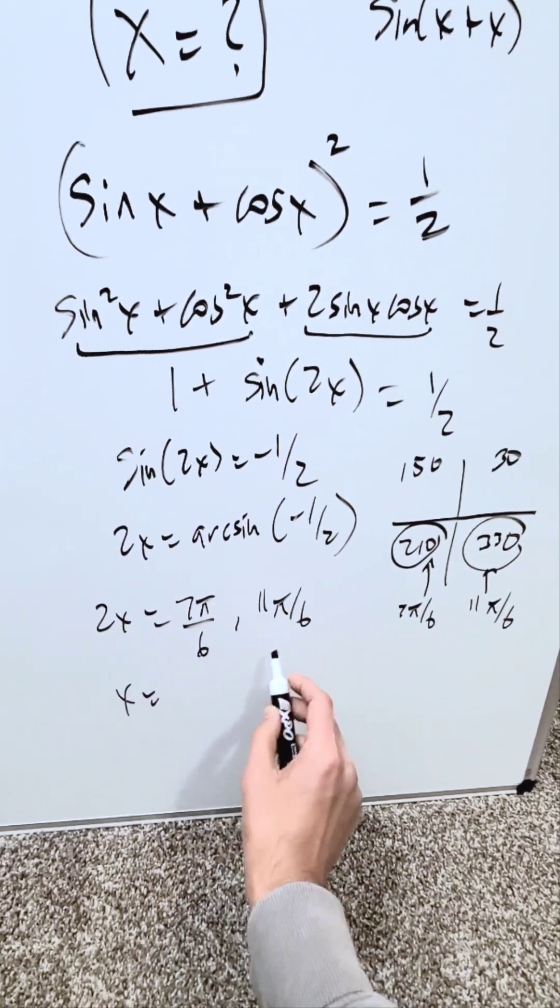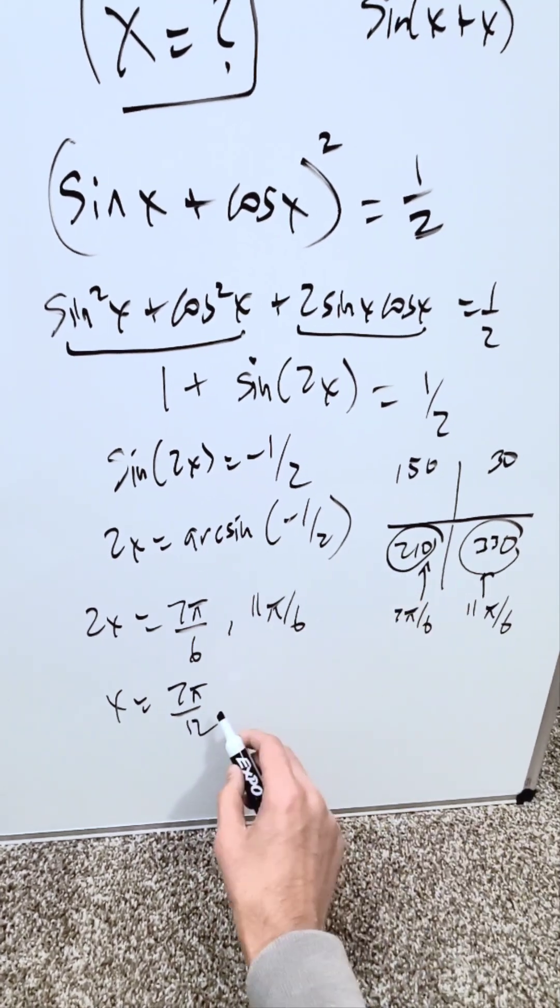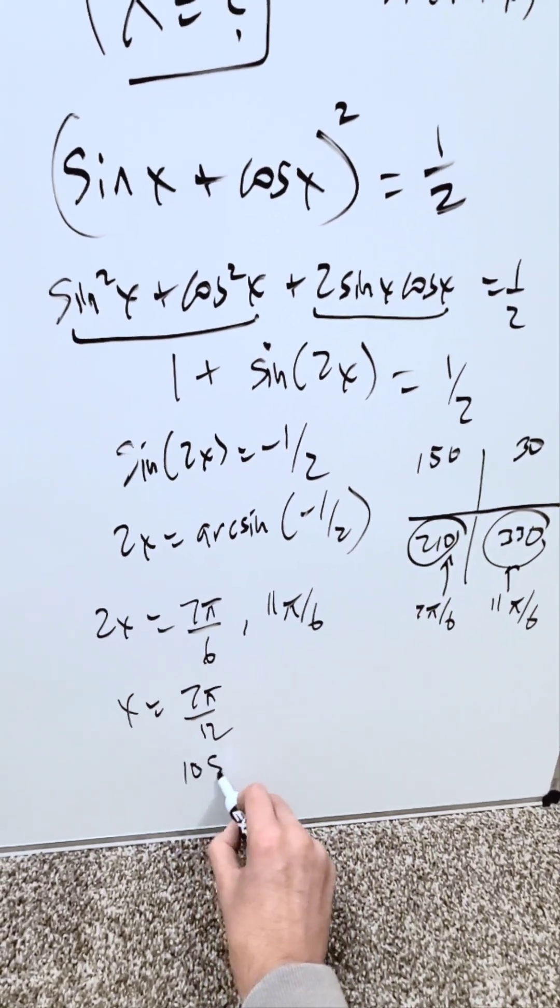Therefore x is equal to, you divide these by 2. I have 7 pi over 12, which is 210 divided by 2 and you know this to be 105 degrees.